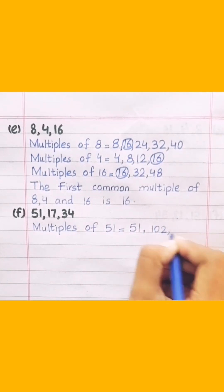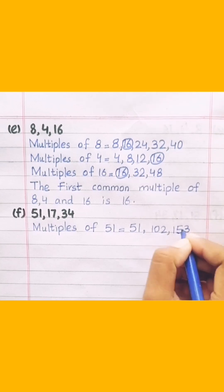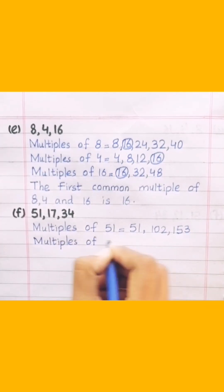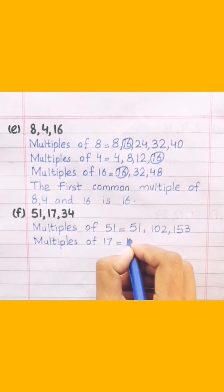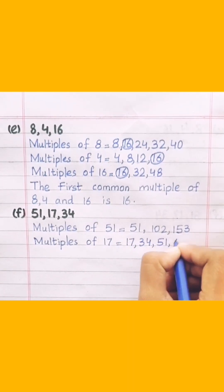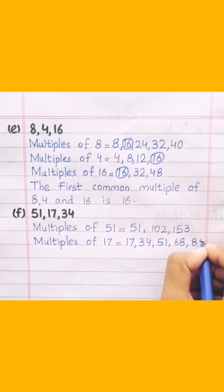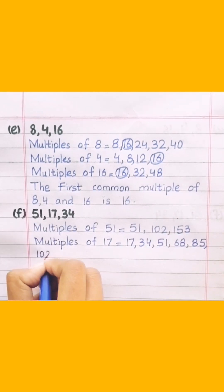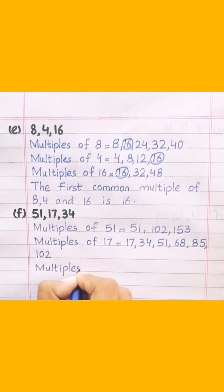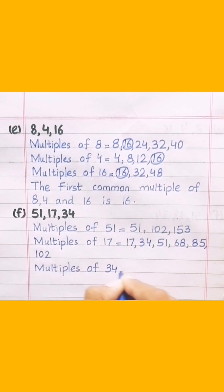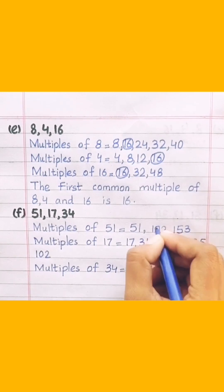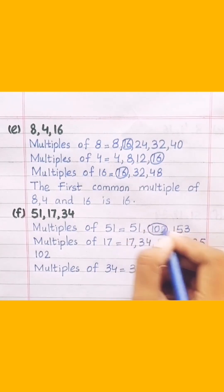Multiples of 51: 51, 102, 153. Multiples of 17: 17, 34, 51, 68, 85, 102. Multiples of 34: 34, 68, 102.